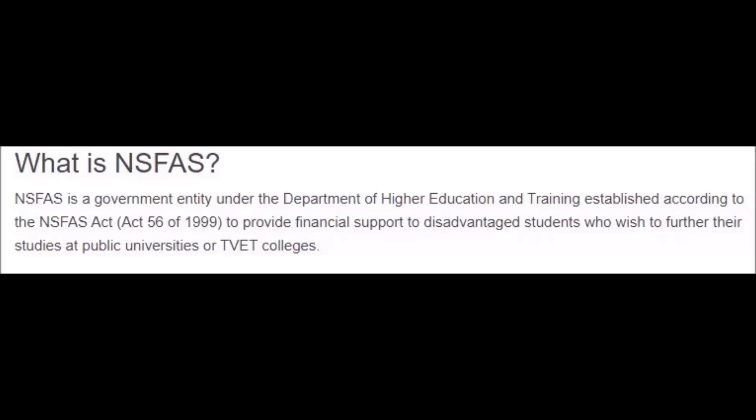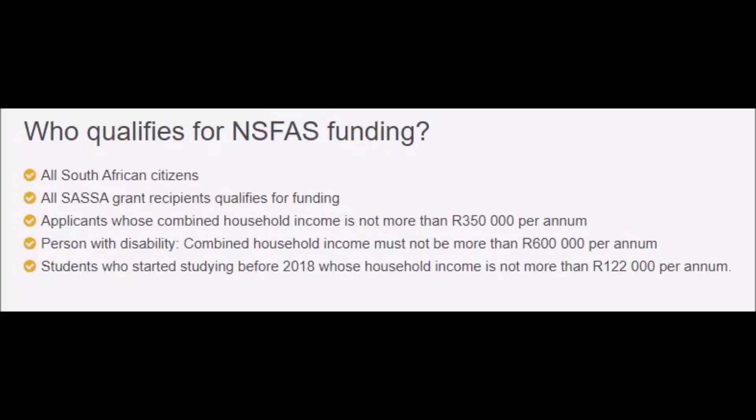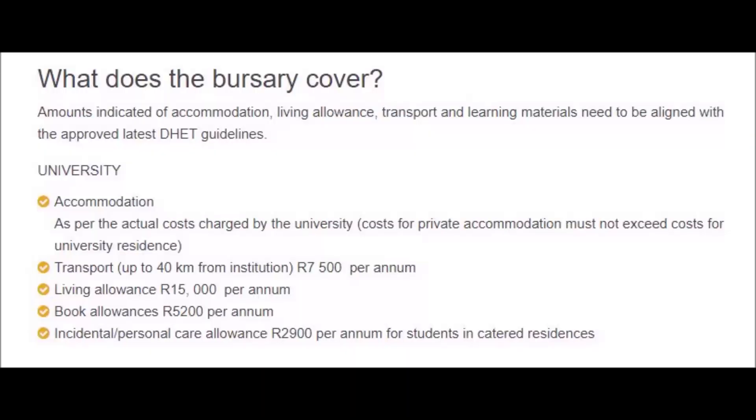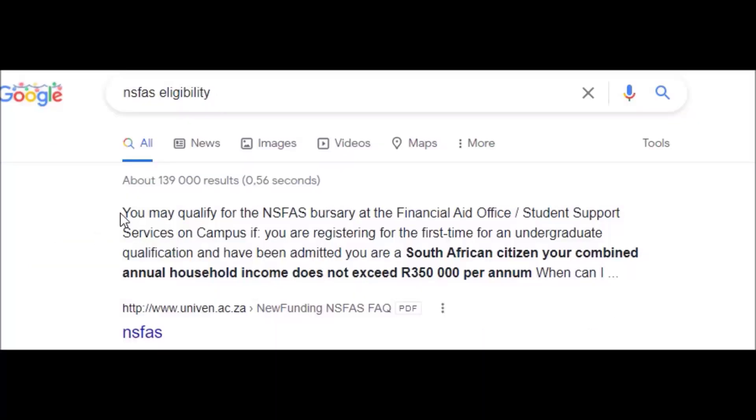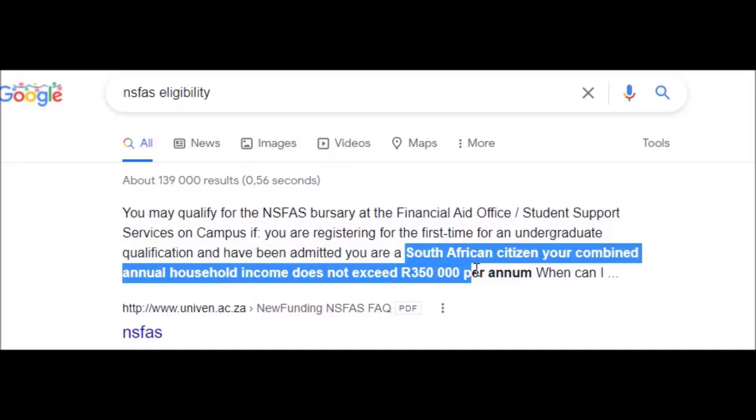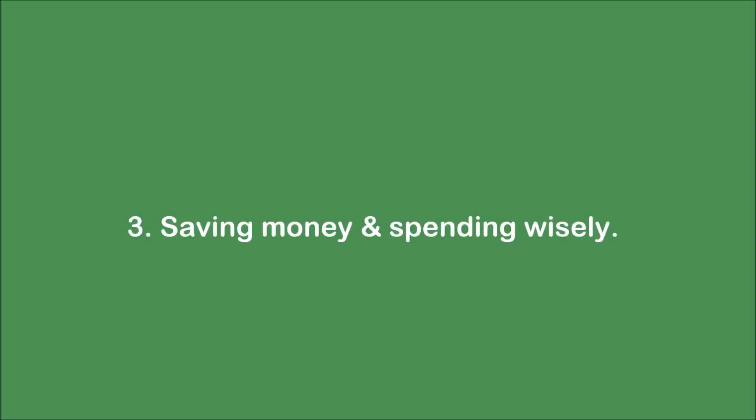According to their website, to qualify for NSFAS you need to be a South African, have a valid matric certificate and ID and proof of acceptance into a higher learning institute. It's also important to note that your combined household income cannot be more than 350,000 rand per year and you must be pursuing an undergraduate degree.